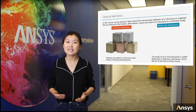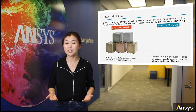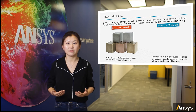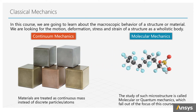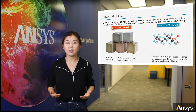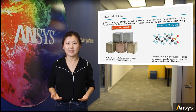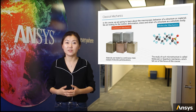To start with, let's define the scope of our course. We are going to learn about the macroscopic behavior of a structure or material. We will be looking for the motion, deformation, stress, and strain of a structure as a holistic body. On the other side, if we zoom into the microstructure of any material, the molecular structure is exposed. The study of such microstructure is called molecular or quantum mechanics, which falls out of the focus of this course. What is discussed in this course will be continuum mechanics. As implied by the name, we treat the material as continuous mass instead of discrete atoms.